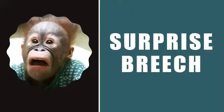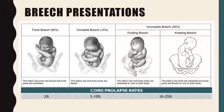Surprise breach! With a presentation of breech, you can see that most babies are going to be frank breech — that's 65%. That's when the baby's hips are flexed but the knee joints are extended. This is going to mimic more of a flexed cephalic presentation.